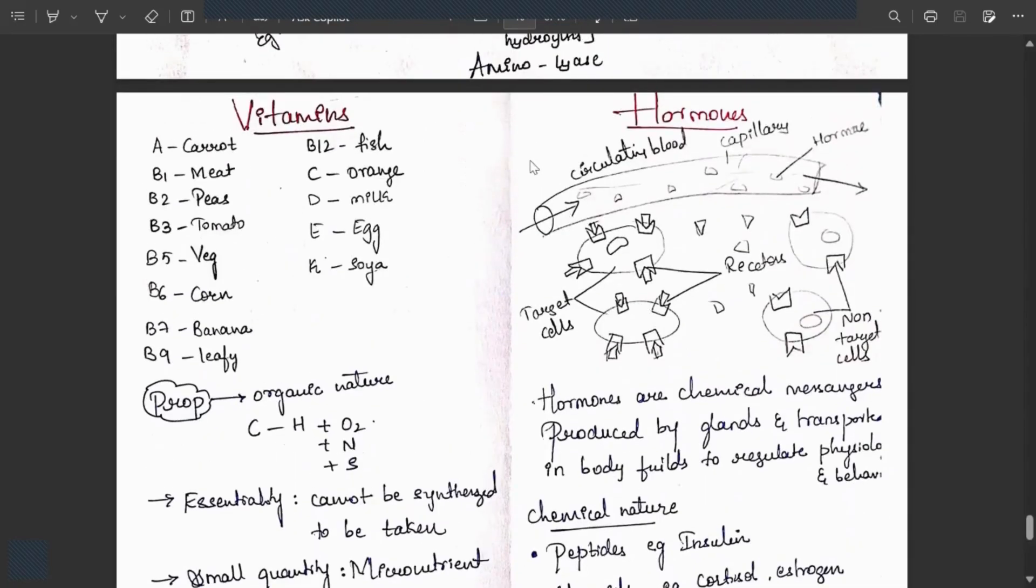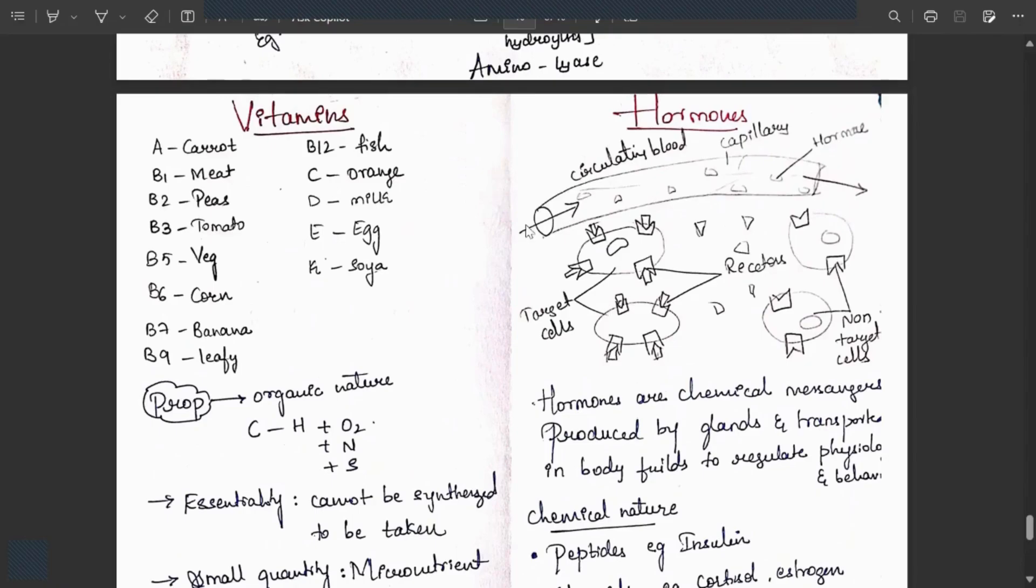Hormones: circulating in blood through capillaries. When hormones are released, they get to only targeted cells. Non-targeted cells do not get the receptors. Hormones are chemical messengers produced by glands and transported in body fluids to regulate physiological processes and behavior.